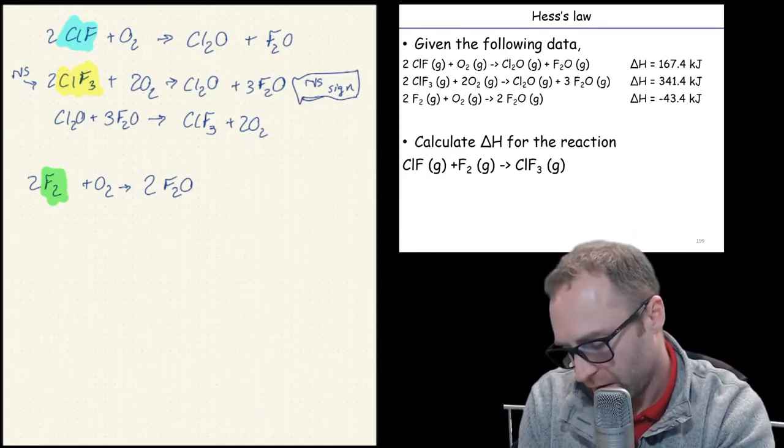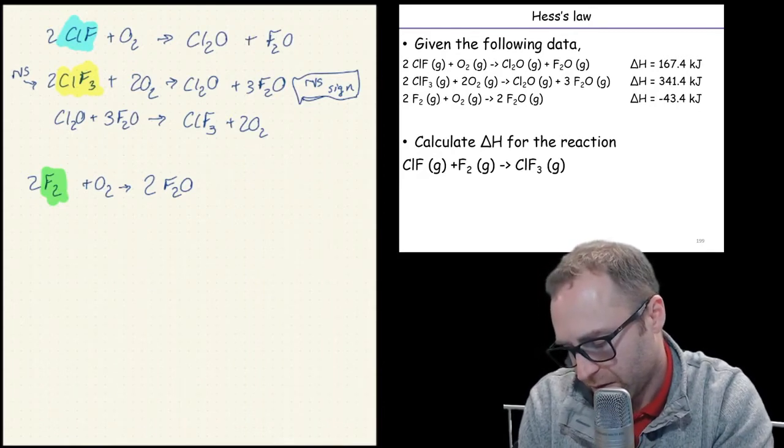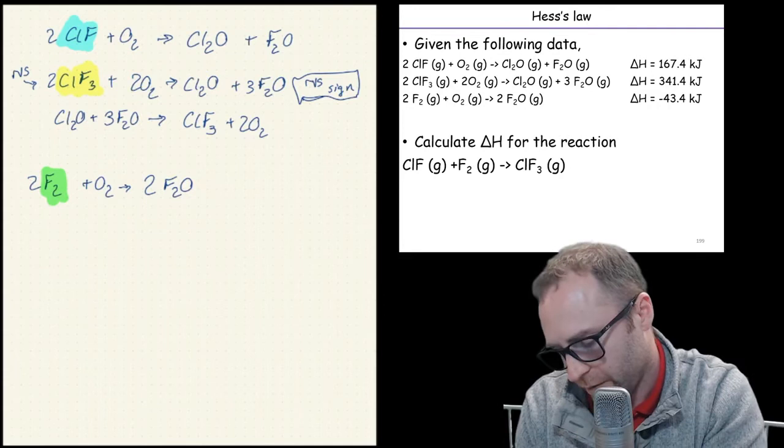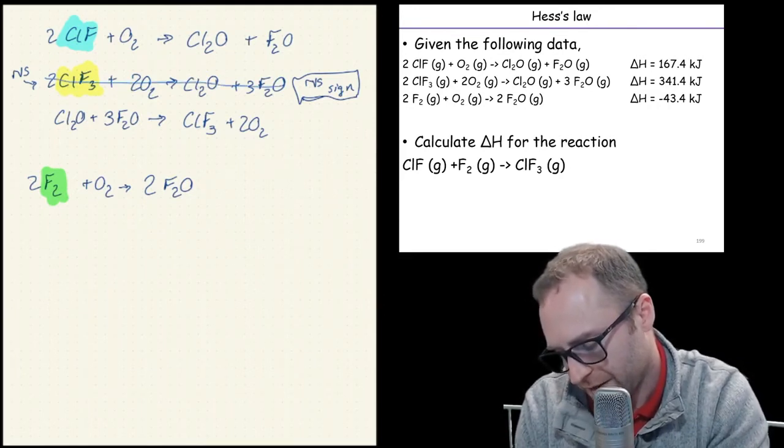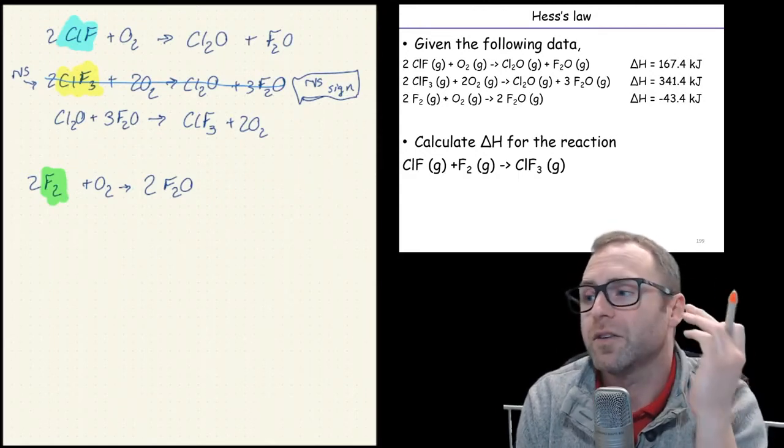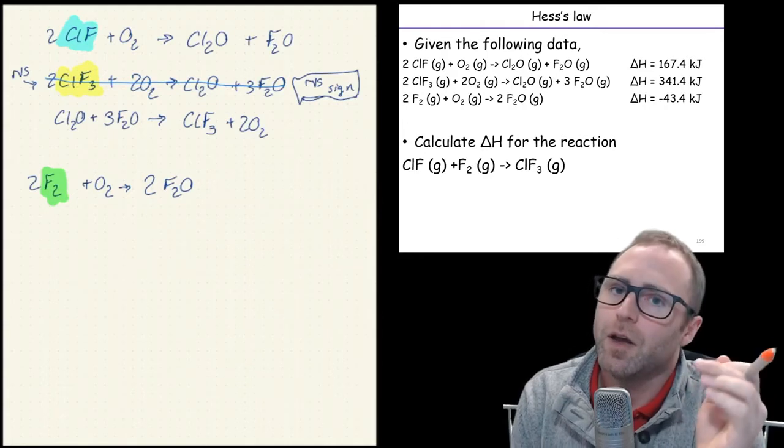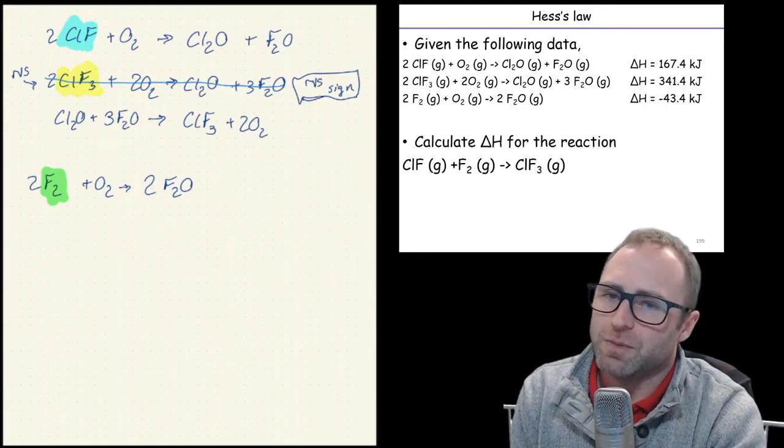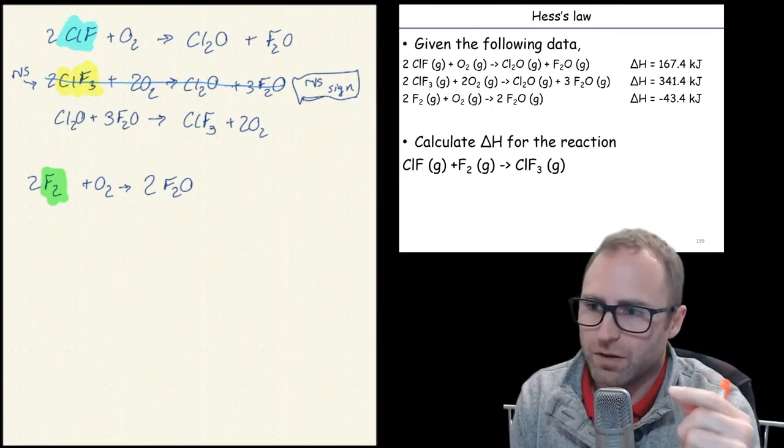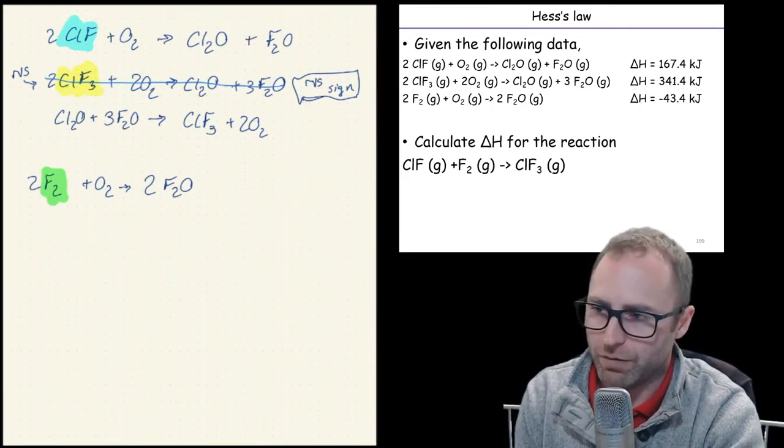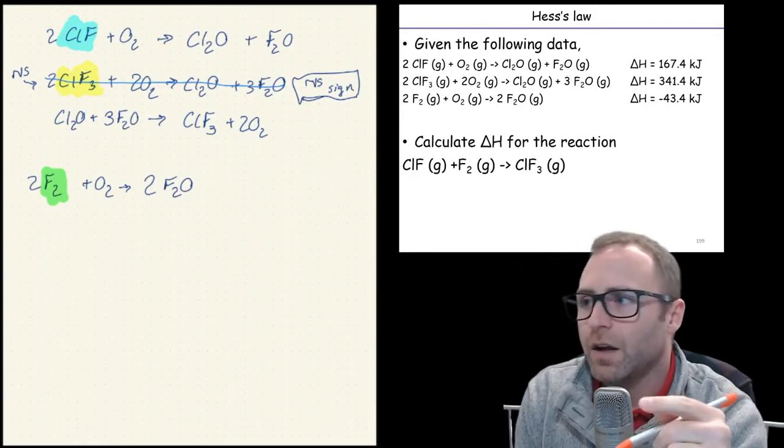Now I need to write myself some kind of note here because I reversed the second reaction. I need to reverse the sign for delta H. And I need to remember that when I'm going to do my final math here. So now I've got, I'm going to just for our sake here to try to make this a little bit easier to see, I'm going to put a line through that second equation the way it was originally written. Not so much because it's dead to us, but because we're not going to use it in that form. We're going to use it in the form that we have rewritten it as.